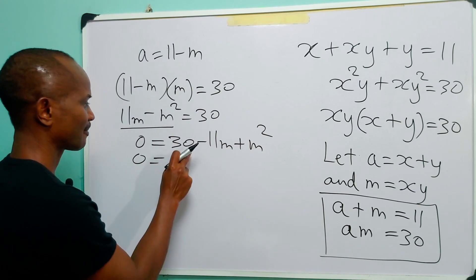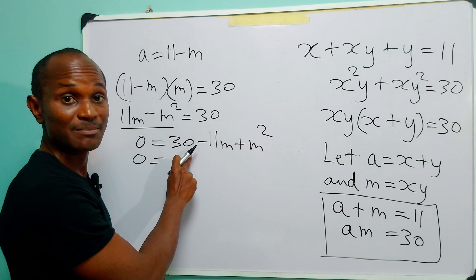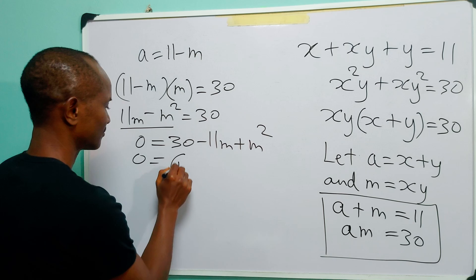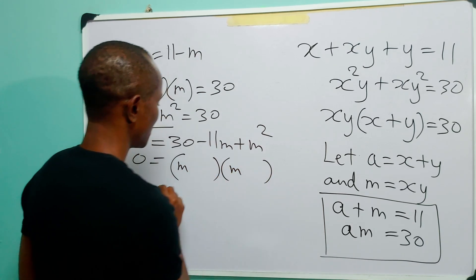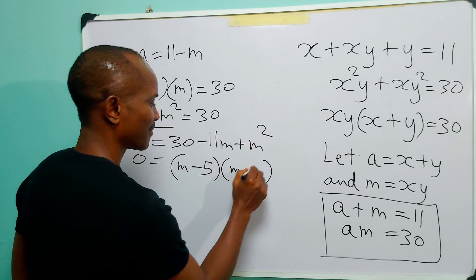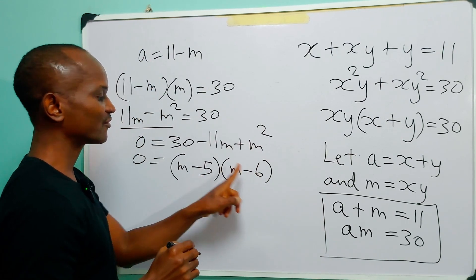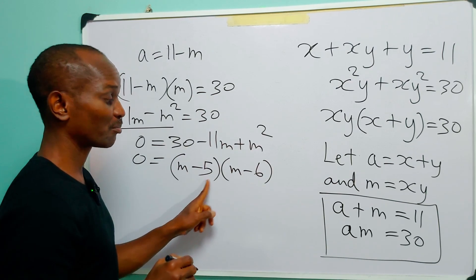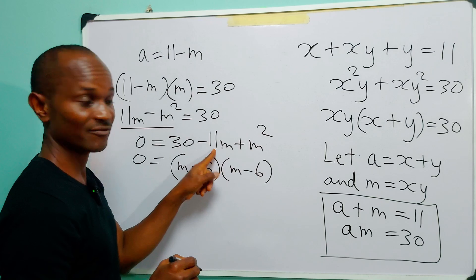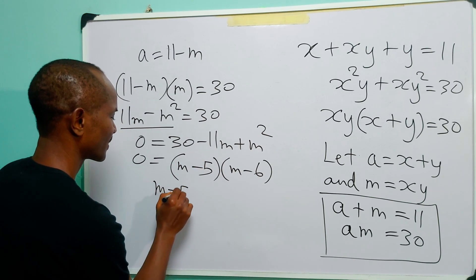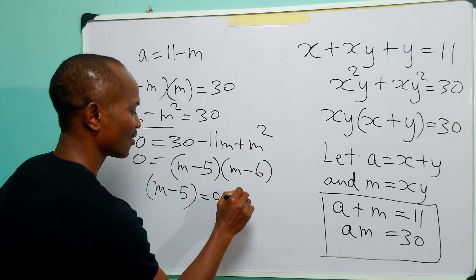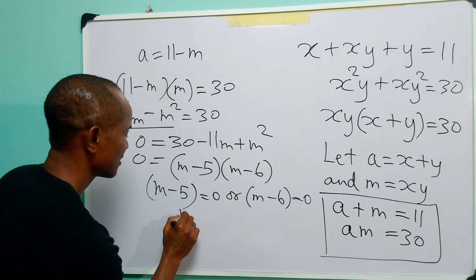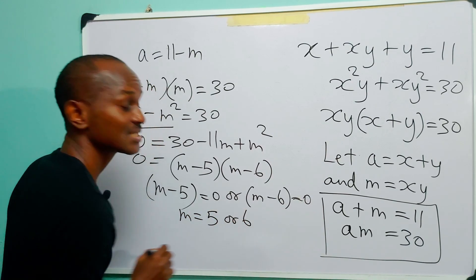The two factors that multiply to give us 30 and add to give us minus 11 are minus 5 and minus 6, because minus 5 times minus 6 is plus 30, and minus 5 plus minus 6 is minus 11. So we have m minus 5 equals 0 or m minus 6 equals 0, giving us m is equal to 5 or 6.